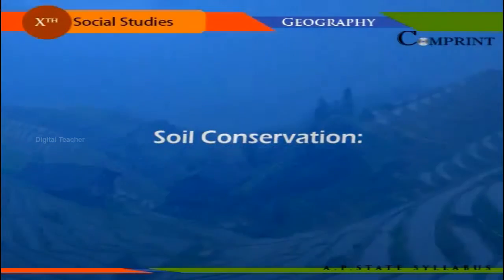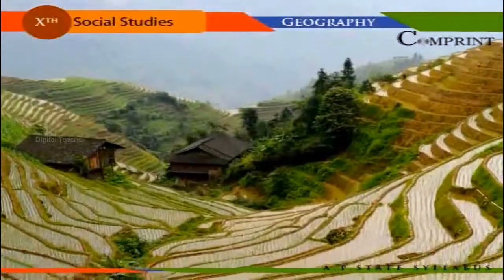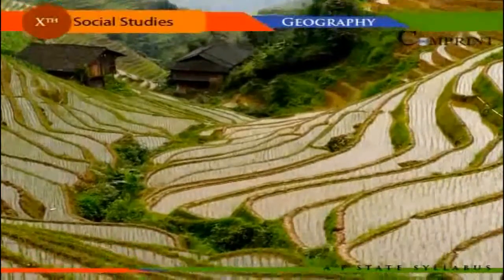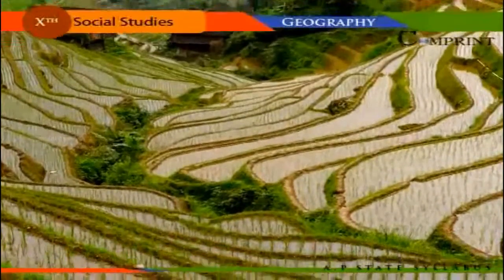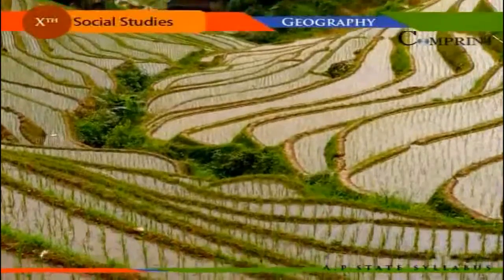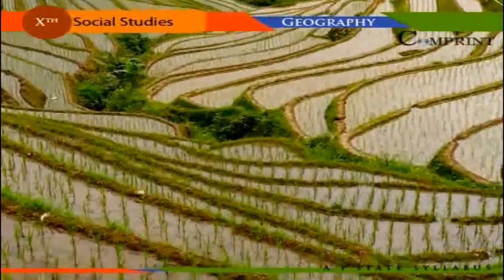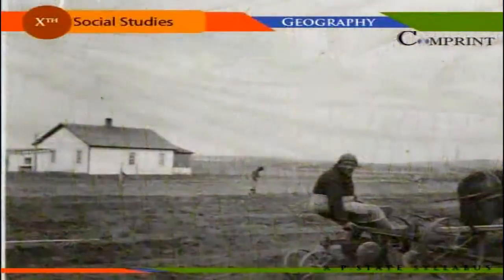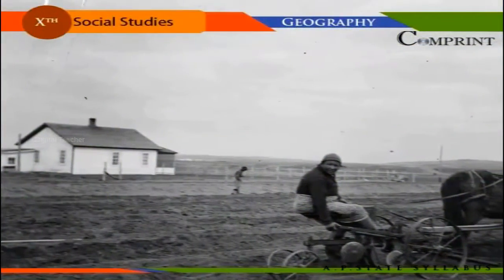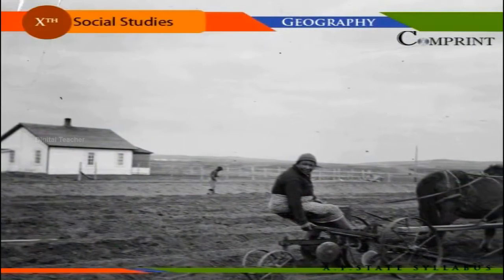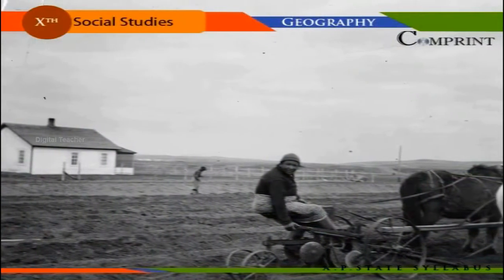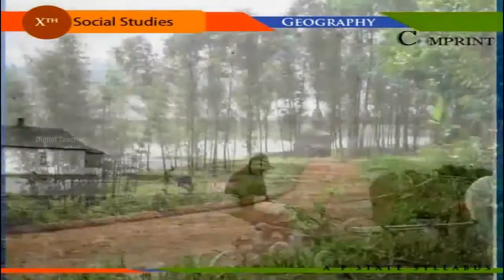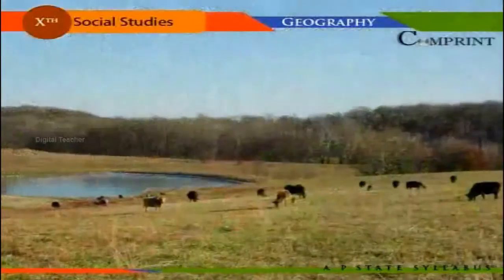Soil conservation includes all such measures and practices which help in protecting and safeguarding the soil from erosion. These methods include both small measures and extensive reclamation schemes such as contour bunding and terracing, construction of bunds across gullies, furrowing, strip cropping, leveling of uneven land, raising of grass and other vegetation along steep slopes, construction of check dams and diversion drains, afforestation, and controlled grazing.